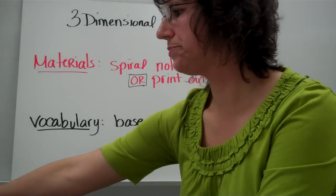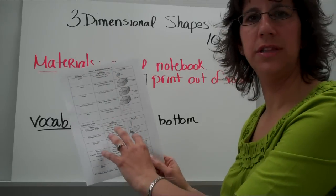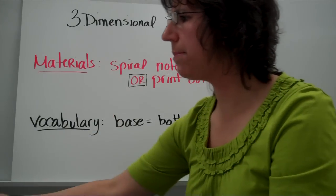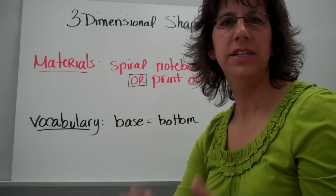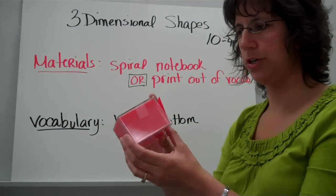All right, so this is what the worksheet looks like, and you've got two charts on the top and the bottom, and the top of the chart just simply talks about different types of three-dimensional shapes.